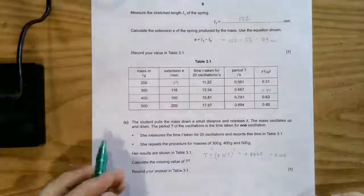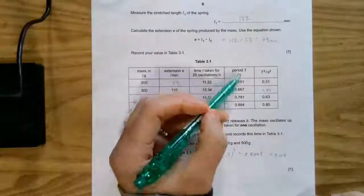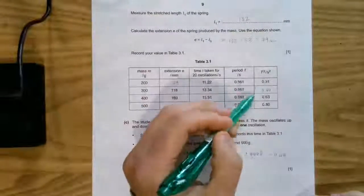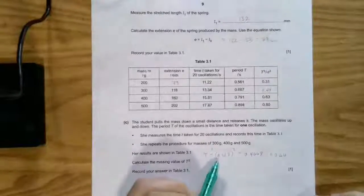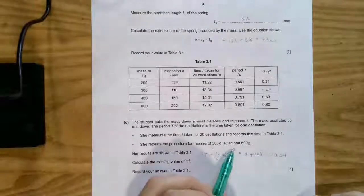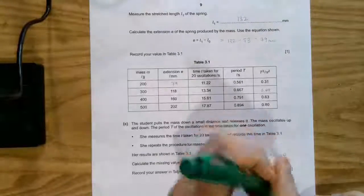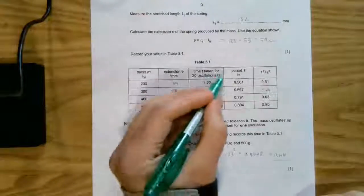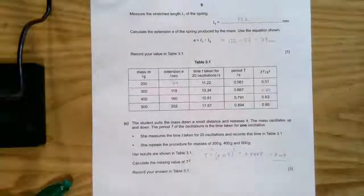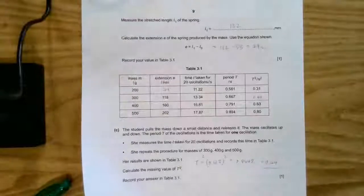We're then asked to calculate the value of t squared. Well, notice here, we've got our period to three significant figures, our t squared is to 2, and so therefore, if we take 0.667 squared, 0.4448, just 0.44, and we have to enter it in. Notice nothing to do with units here. However, it's a really good thing for you to check that you're not having to add anything else in there.